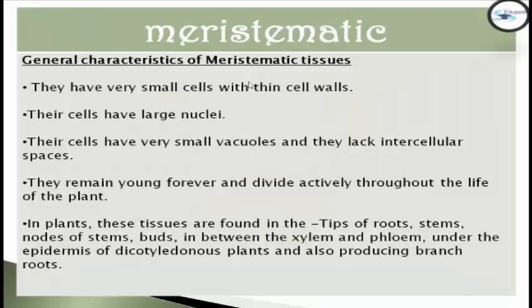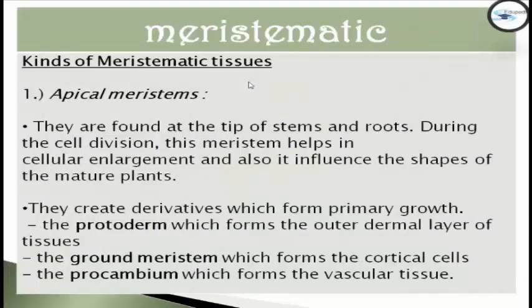The last system is the meristematic system. The general characteristics of meristematic tissue: they have very small cells with thin cell walls, large nuclei, very small vacuoles, and they lack intercellular spaces. They remain young forever and divide actively throughout the life of the plant. In plants, these tissues are found in the tips of roots, stems, nodes of stems, buds, in between the xylem and phloem, under the epidermis in dicotyledonous plants, and also in producing branch roots.